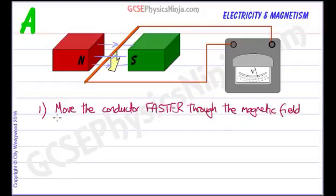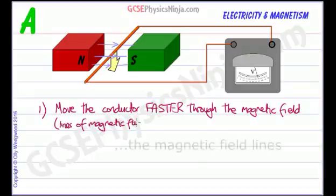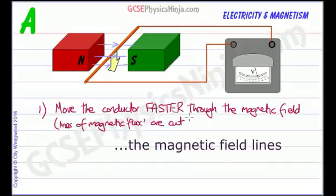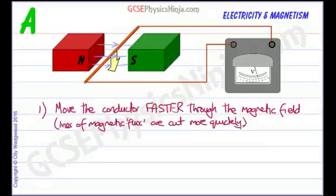And that means that lines of magnetic flux are cut more quickly. The faster that you cut those lines with the conductor, as long as you're at 90 degrees to the lines, then the more EMF you will induce.